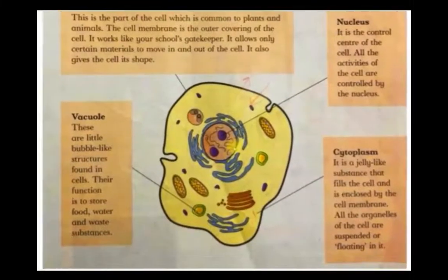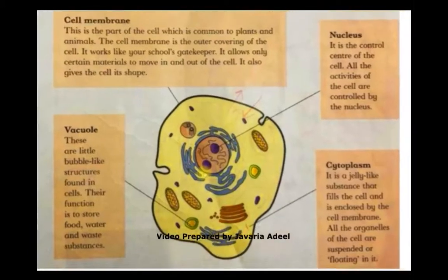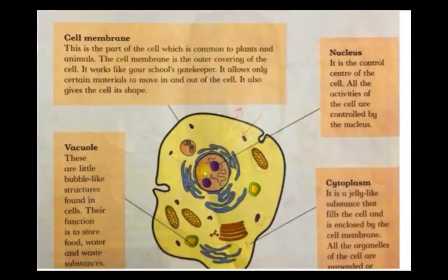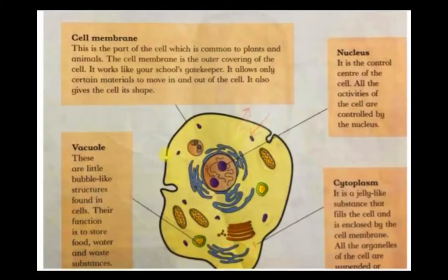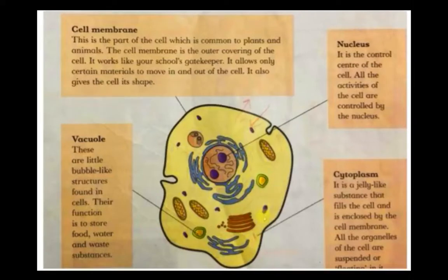On page 3 we have an animal cell structure. You can see that its outer covering is highlighted here — this outer covering or outer membrane is called the cell membrane. The purple rounded structure is the nucleus. The yellow structures I am pointing towards are the cytoplasm and the vacuoles.